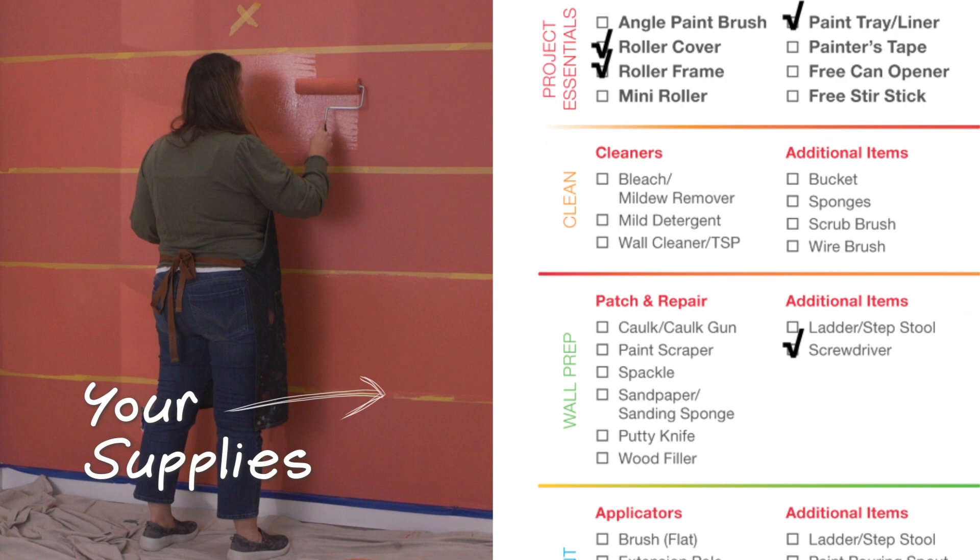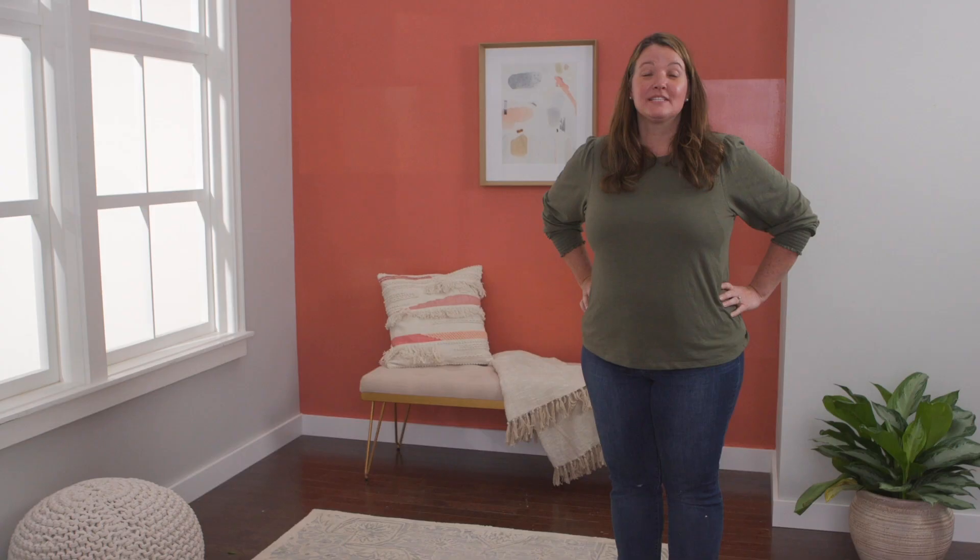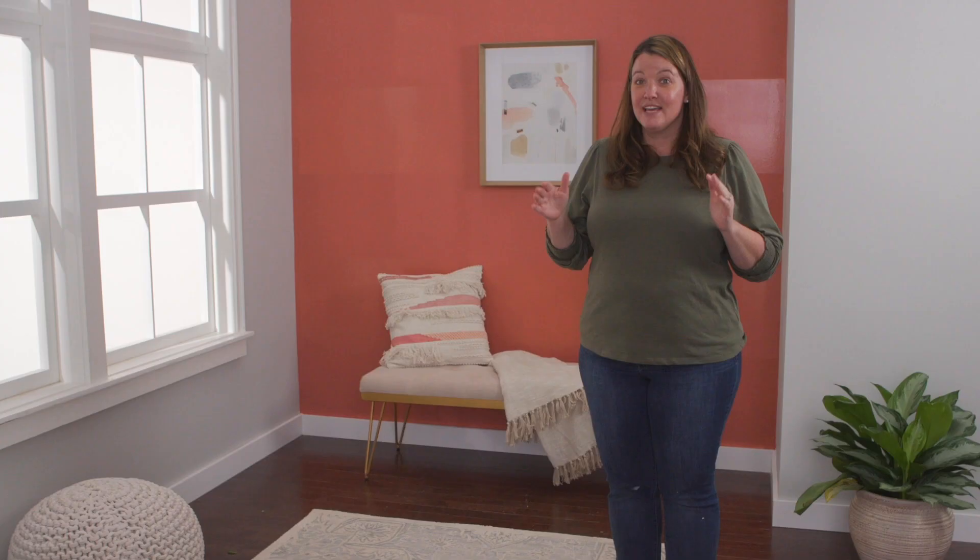Here's all the supplies you need for today's project. Step one, choose vertical or horizontal stripes. Horizontal stripes make the room appear spacious and vertical stripes make the ceiling appear higher.